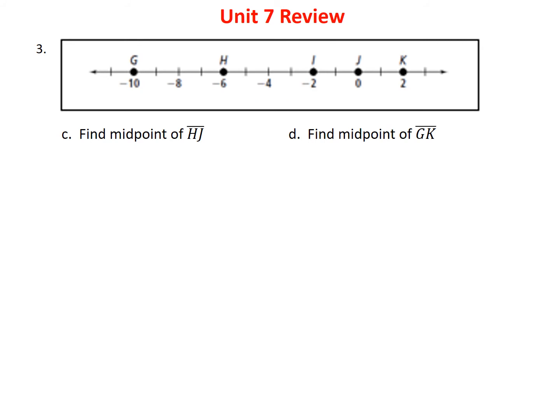For parts C and D, we're asked to find the midpoint. To find a midpoint, take the two coordinates, add them together, and divide by two — like finding an average. To find the midpoint between H and J: (-6 + 0) / 2 = -6 / 2 = -3. So the midpoint is at -3, which is three units from each endpoint.